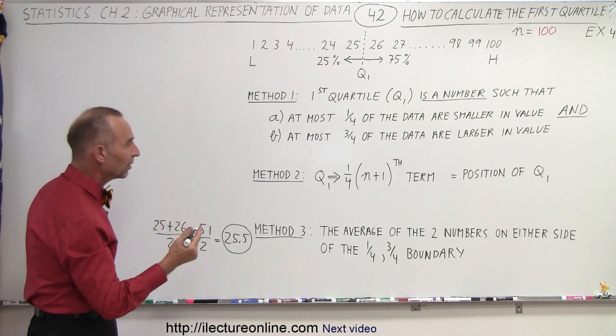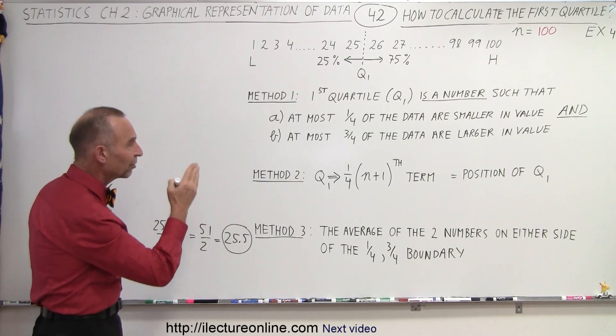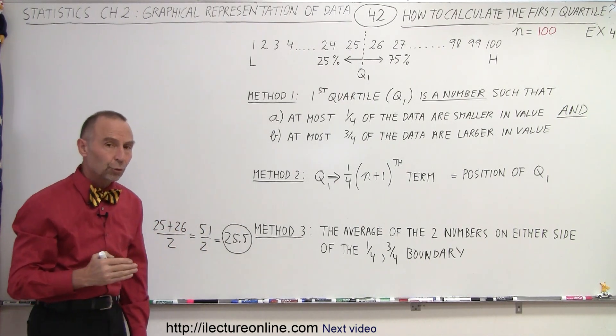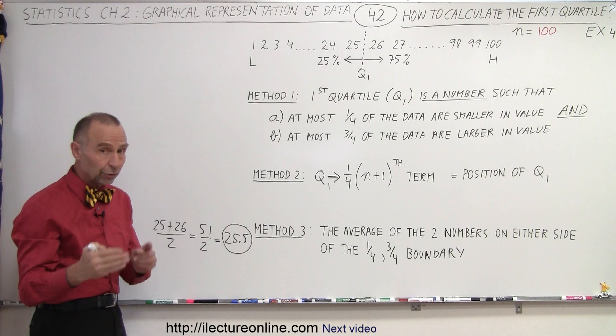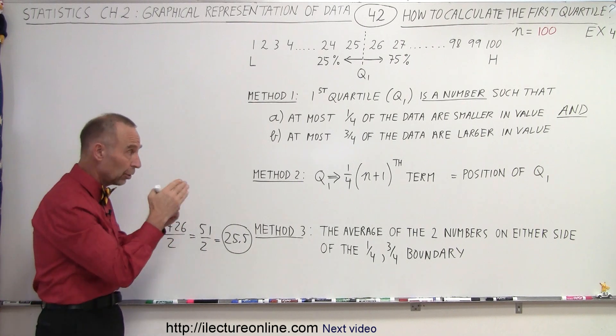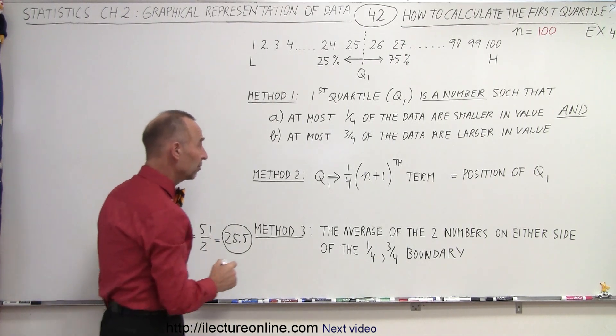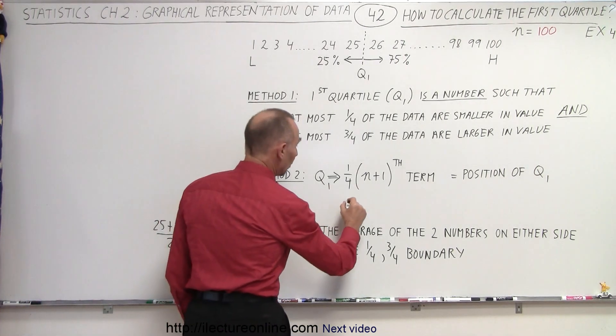A more practical way to do it would be method 2 — it's the quickest method. It finds the position of the first quartile, and then you look for the data point at that position.